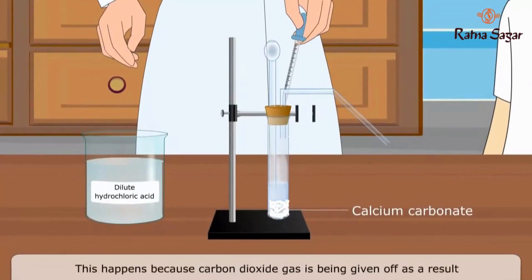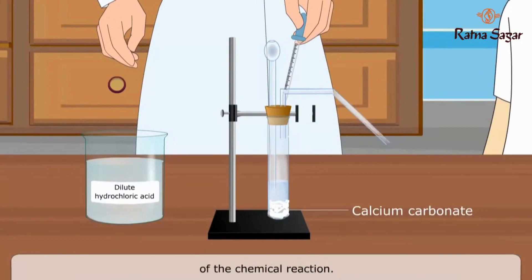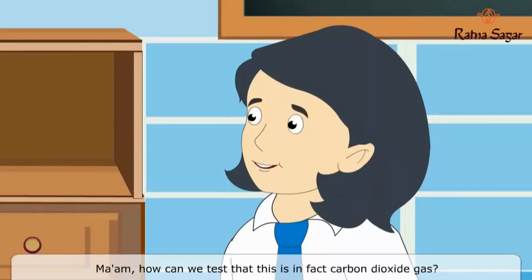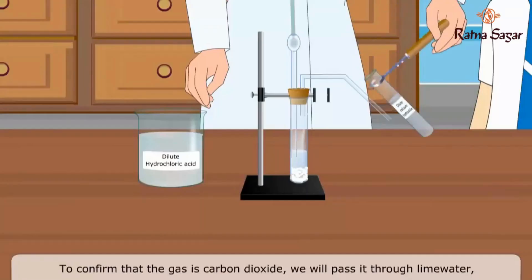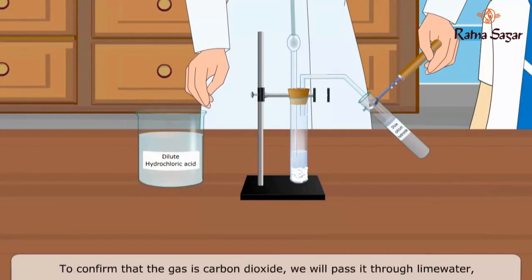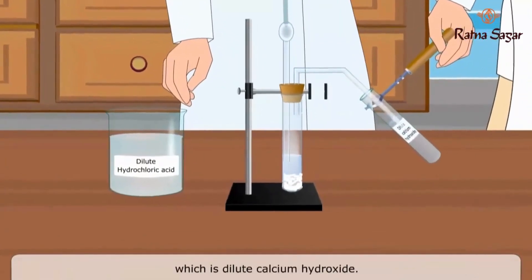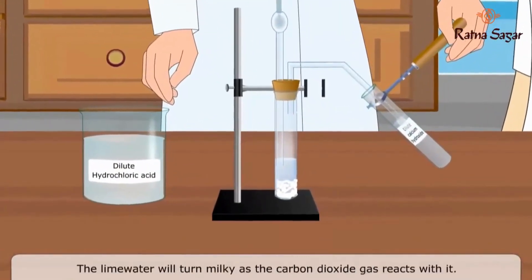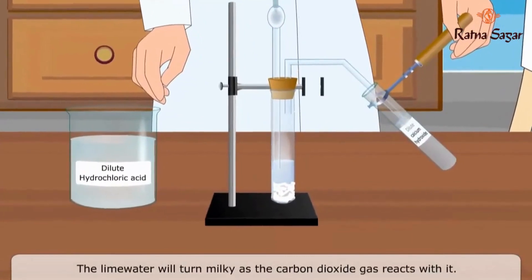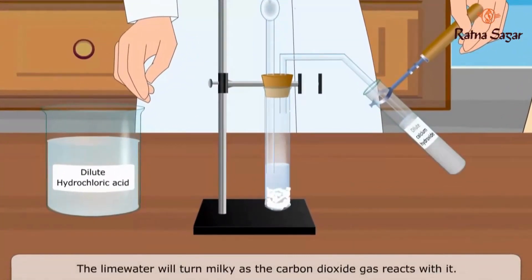This happens because carbon dioxide gas is being given off as a result of the chemical reaction. How can we test that this is in fact carbon dioxide gas? To confirm that the gas is carbon dioxide, we will pass it through lime water, which is dilute calcium hydroxide. The lime water will turn milky as the carbon dioxide gas reacts with it.